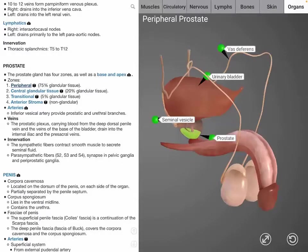Four zones are the peripheral, central glandular tissue, transitional, and anterior stroma.